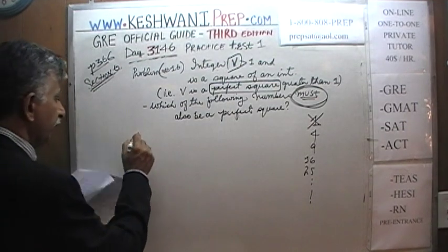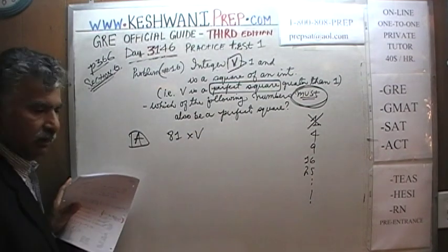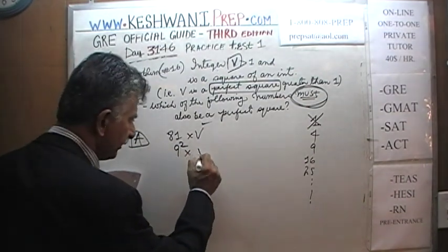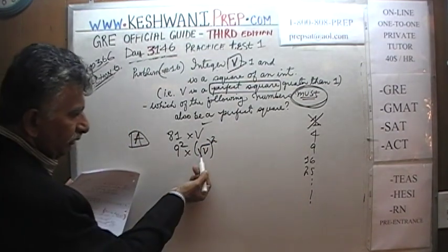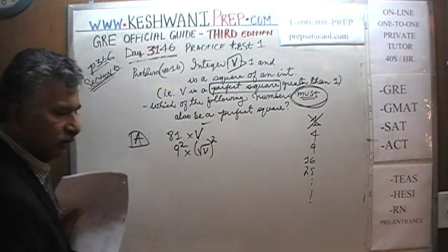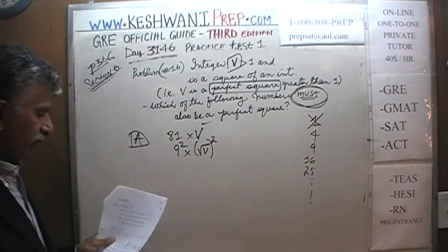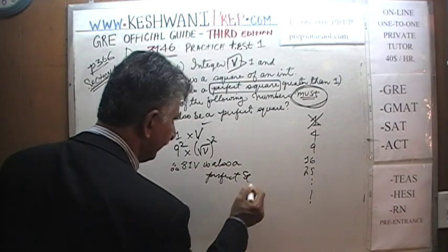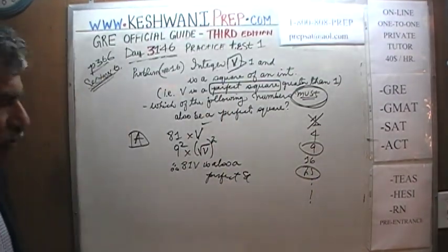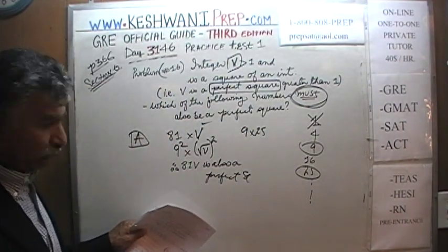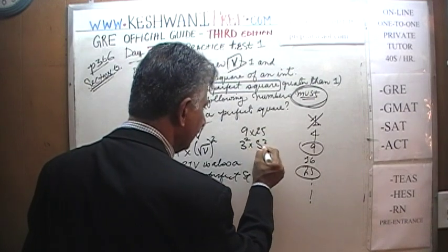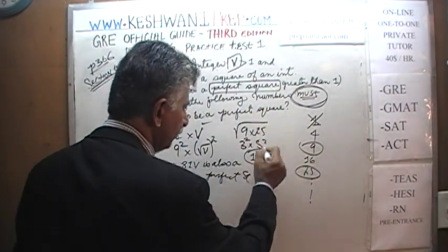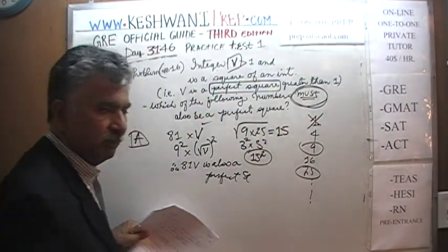Let's look at statement one: 81 times V. V we know is a perfect square. 81 is also a perfect square — it is 9 squared. The product of two perfect squares will also be a perfect square. For example, 9 times 25: 9 is 3 squared and 25 is 5 squared, so their product is 15 squared. The square root of that quantity simply equals 15.